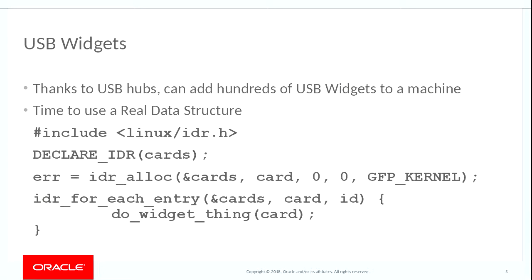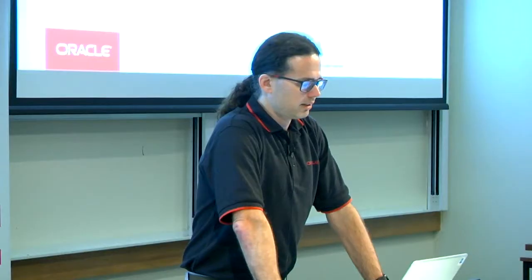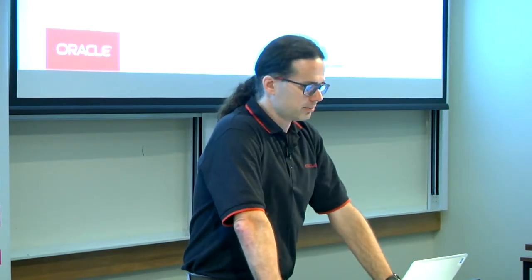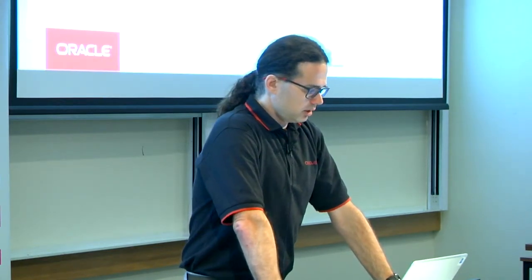Then Acme Corp decided to introduce USB widgets and, thanks to the magic of USB hubs, you can have dozens or hundreds of USB widgets in a single machine. So it's time to use a real data structure for this. Fortunately Linux has one — it's called the IDR — and this lets you dynamically allocate essentially an array. You put a data structure into this array and it tells you where it put it, and then you can iterate over each entry in the IDR and call a function to handle each card.